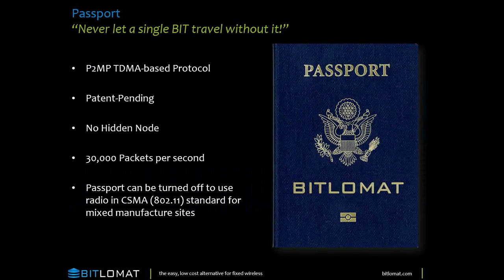Passport — never let a single bit travel without it. The marketing people got a hold of that one. It is a point-to-multipoint TDMA-based protocol. Right now we run about 28,000 packets per second with TDMA on, and about 30,000 with it turned off. With the next iteration of our software when we jump to a newer version of Linux and a newer kernel, we expect somewhere in the neighborhood of 35,000 to 38,000 with TDMA on and about 40,000 with it turned off in CSMA mode.